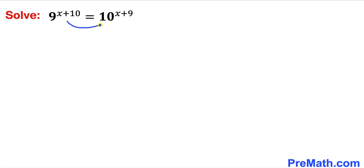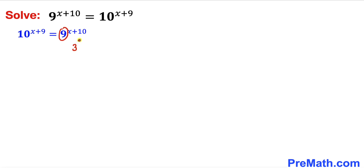Let's go ahead and turn these terms around. As you can see in this next step, this is going to make our job a little bit simpler. Now let's focus on the base 9. 9 could be written as 3². So therefore this equation is going to become — the left hand side stays the same — and the right hand side can be written as (3²)^(x+10).